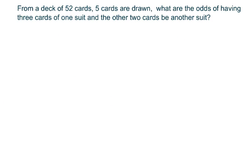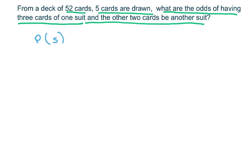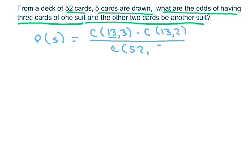Okay, and the next one. From a deck of 52 cards, 5 cards are drawn. What are the odds of having 3 cards of 1 suit and the other 2 cards being another suit? So what I'm going to do is first do the probability of the success, which is going to be I'm taking 3 cards from 1 suit. There's 13 cards in a suit. That's where that's coming from. And I'm taking 2 cards from another suit, and our total is 52, and we're choosing 5 cards.